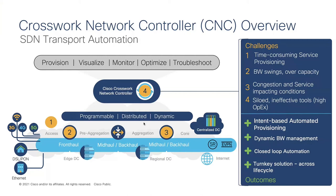Let's step back and take a quick look at what we want from a Crosswork Network Controller. This is your traditional transport network, built to support business services like L2/L3 VPNs, mobile backhaul, and video transport — all running on a segment routing network. Segment routing simplifies deployment of services over large-scale networks and makes it possible to deploy large-scale segment routing traffic engineering.